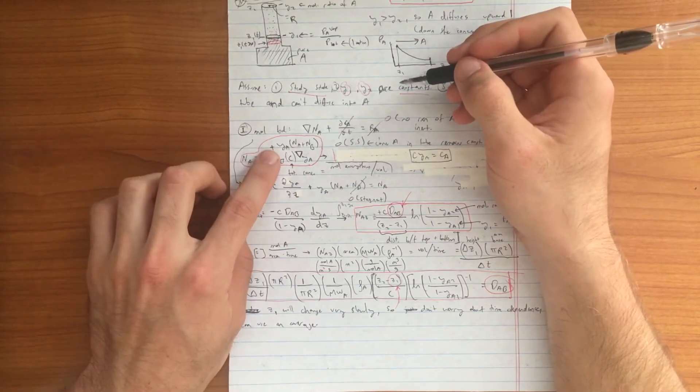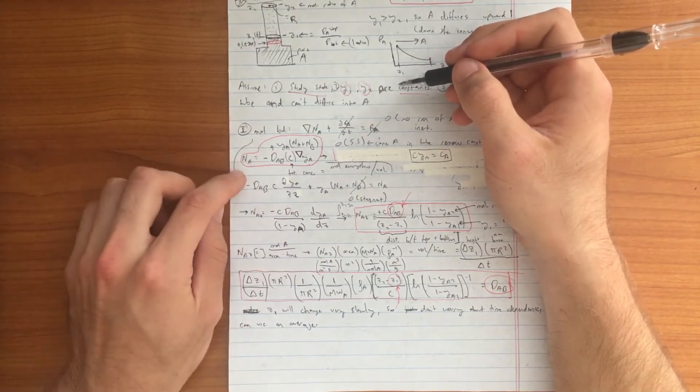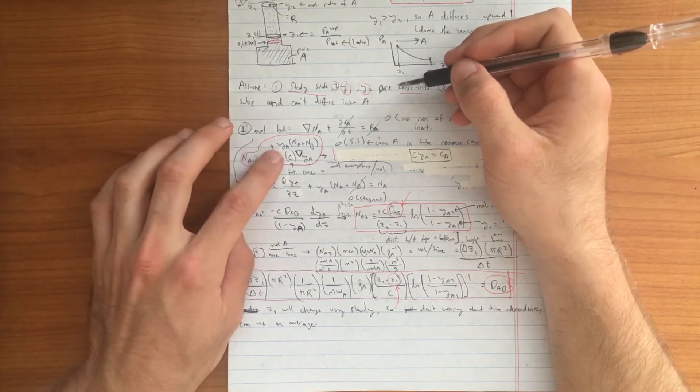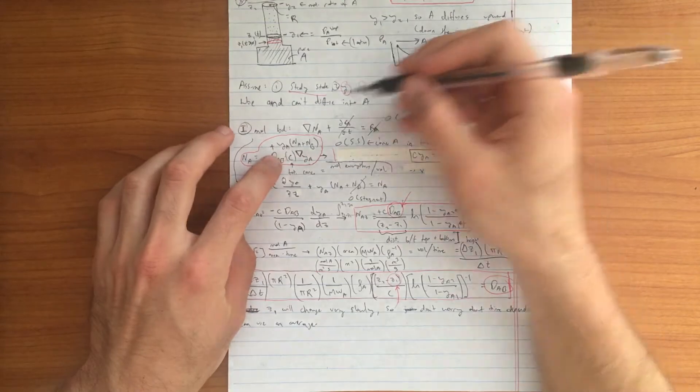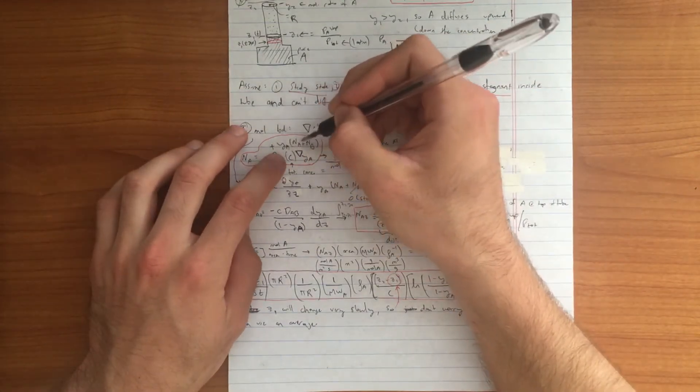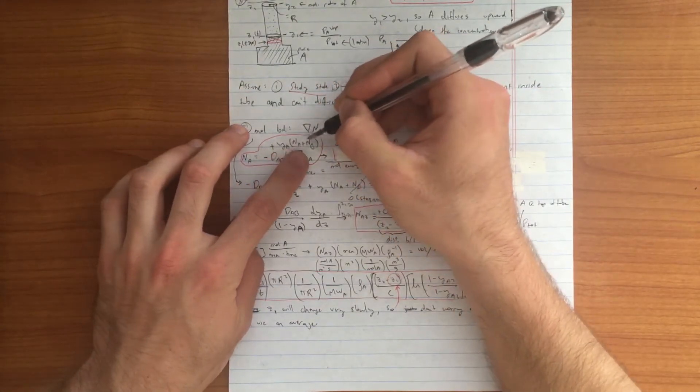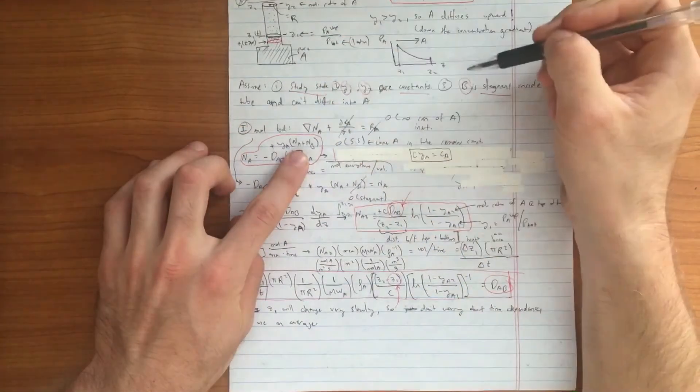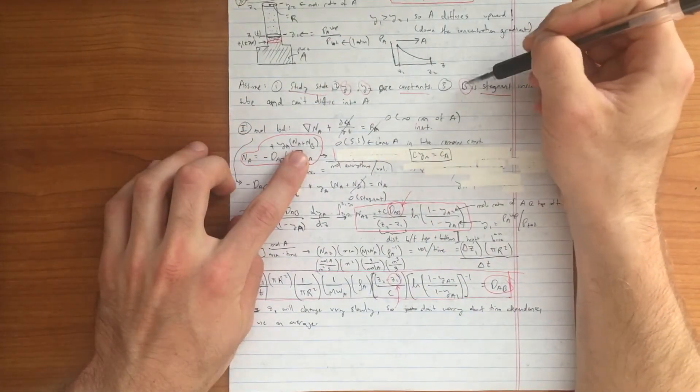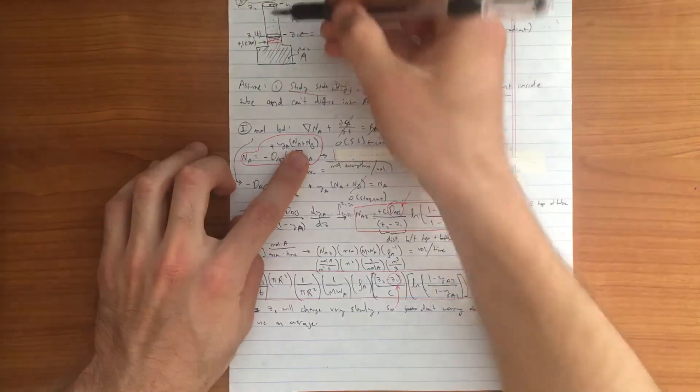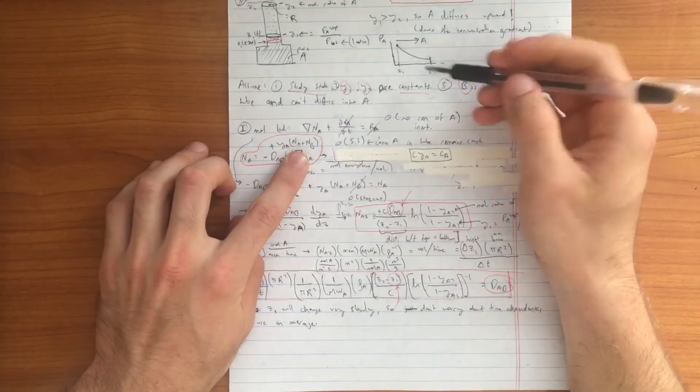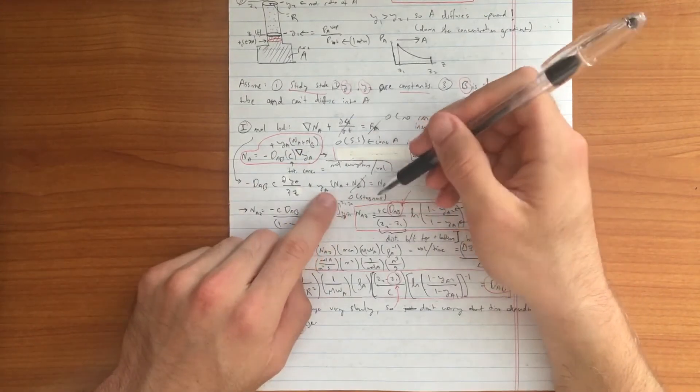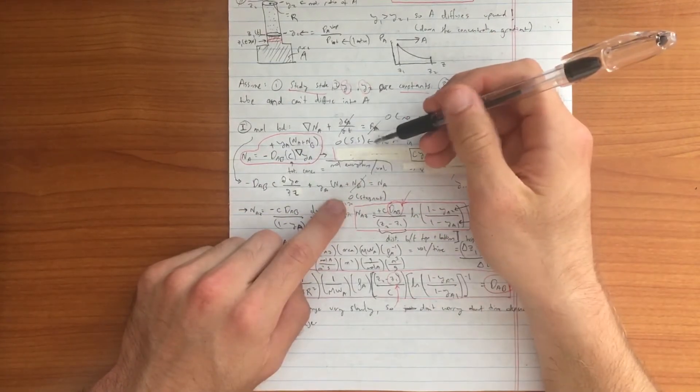In addition to this, our flux of A also has a convective component to it as well, which is the mole fraction of A times the molar flux of A plus the molar flux of B. One of our assumptions was to say that B is a stagnant fluid within this Arnold cell. What that lets us do is it lets us cancel that out, which makes our calculations easier.